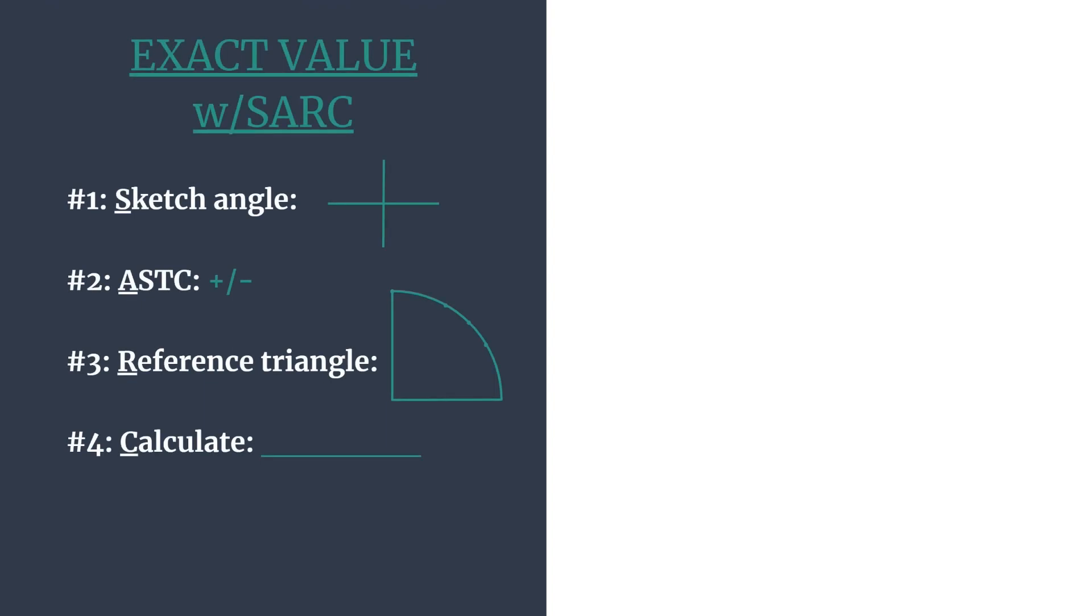SARC is just an acronym to remember all of the steps when finding an exact value. S will sketch the angle's terminal side. A for ASTC, which is our acronym to decide which trig functions are positive in each quadrant and thus what our final sign should be for our exact value. R for reference triangle, so we'll find the reference angle, the special right triangle, and coordinates that go with it, and then C for calculating our trig ratio.